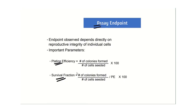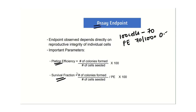For example, if 100 cells are seeded at the start of the experiment and you get 70 colonies after counting, you calculate plating efficiency by dividing the number of colonies by the number of cells seeded, giving a plating efficiency of 0.7.